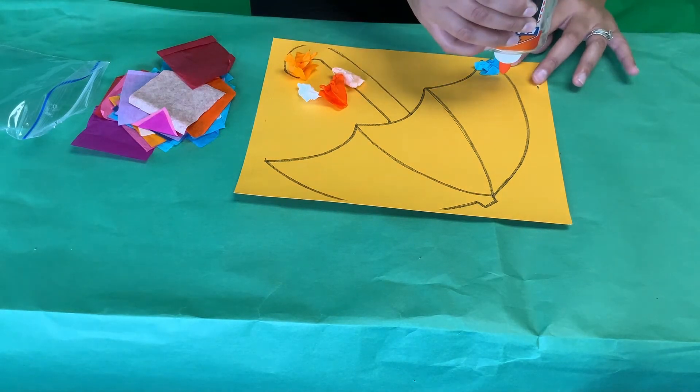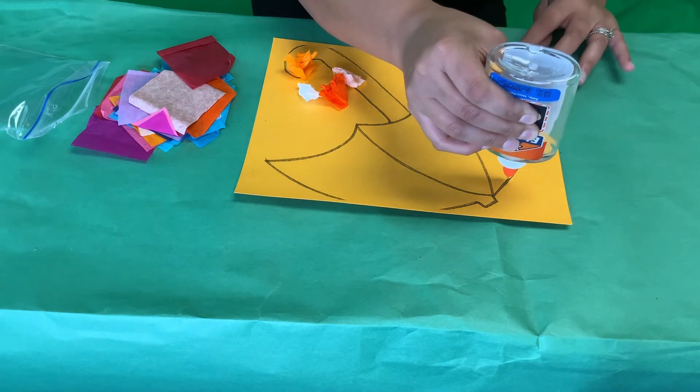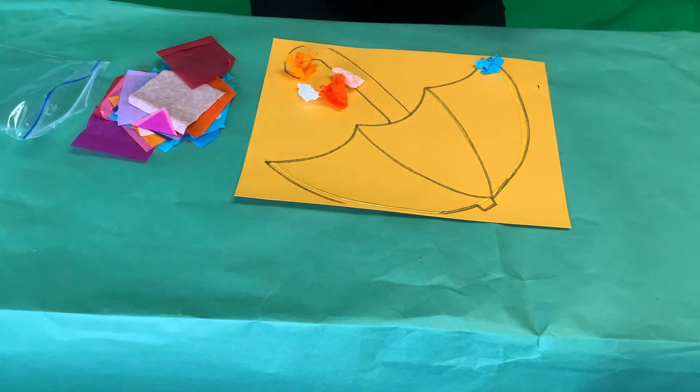First, I want to glue around the umbrella because I want to see the letter U first.